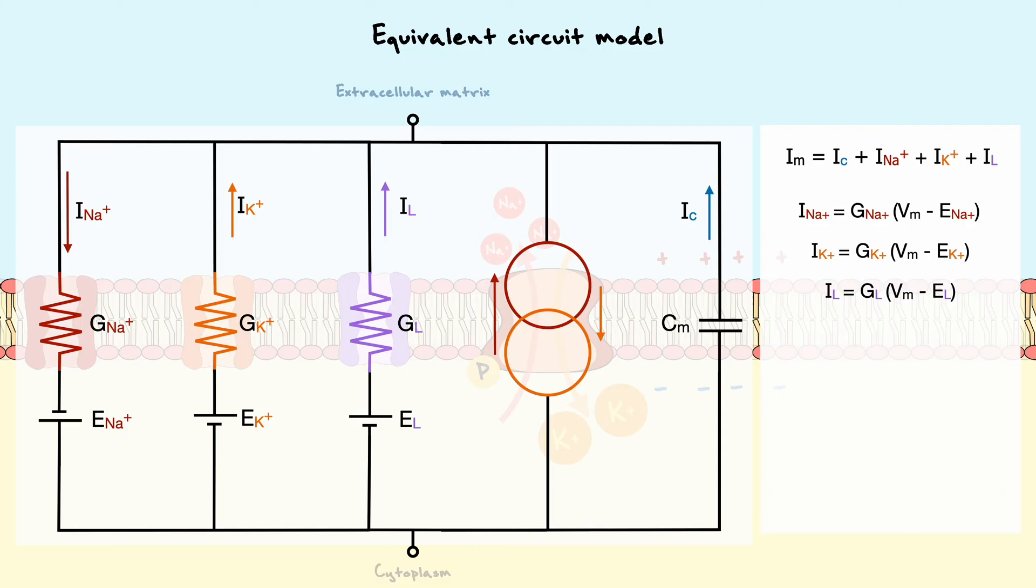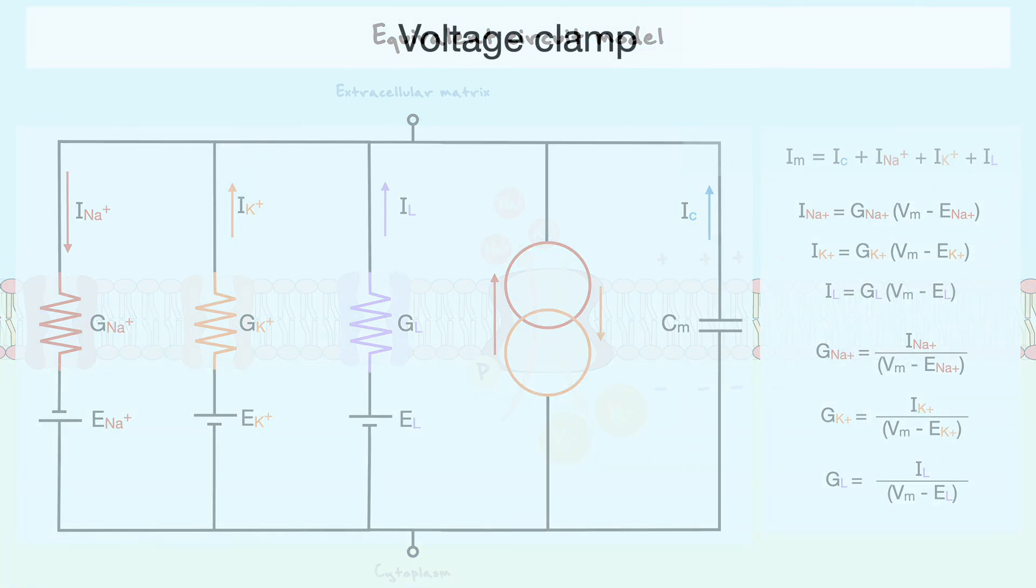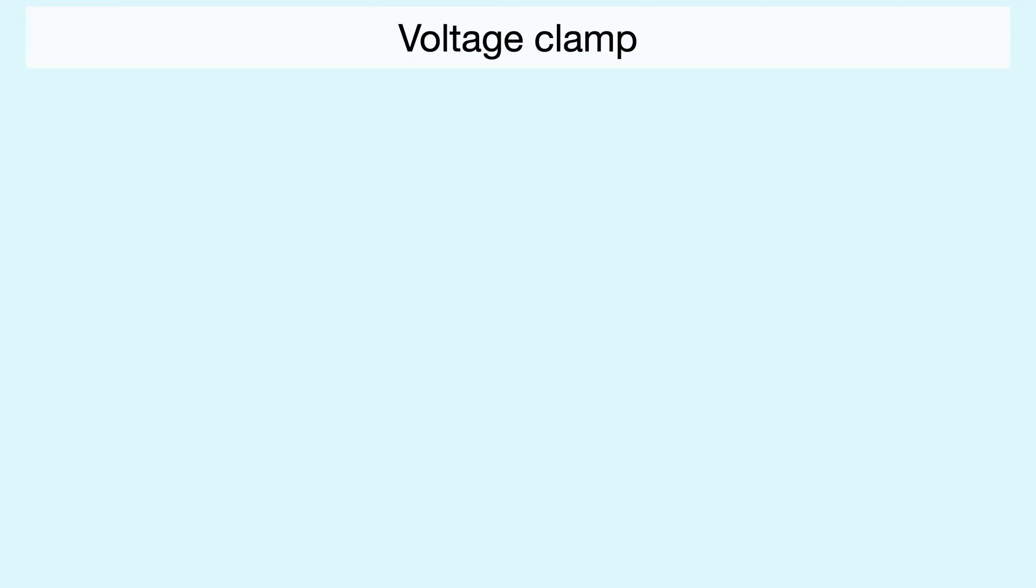From these equations, we can thus get an expression for the conductance of each ion which is simply the current divided by the driving force. To illustrate how the conductances evolve over time and voltage, let's consider some voltage clamp recordings.